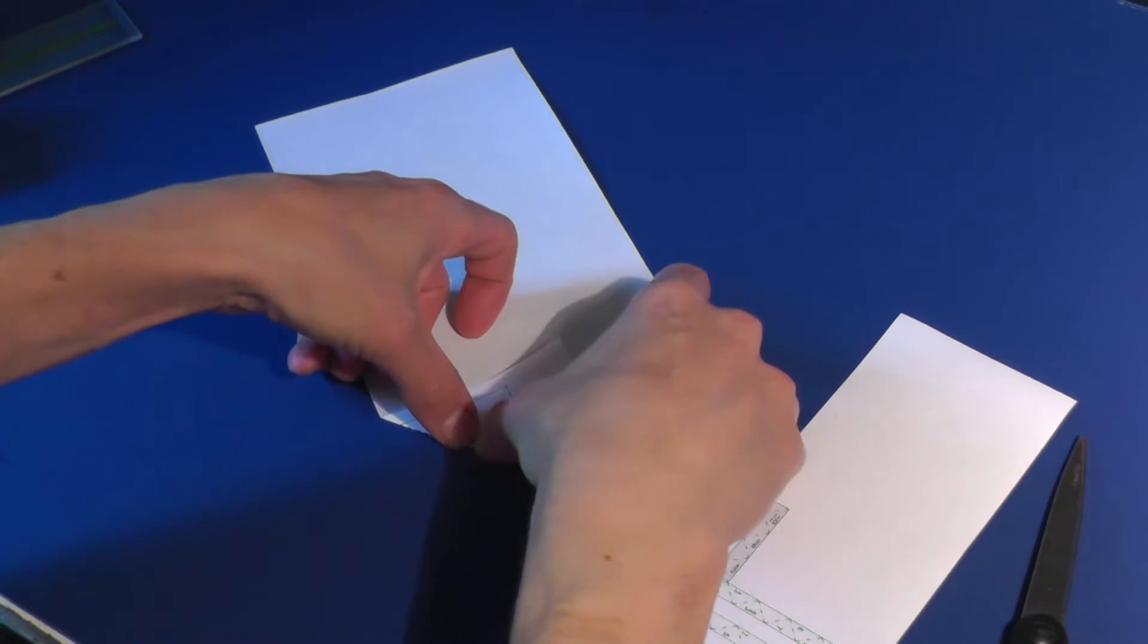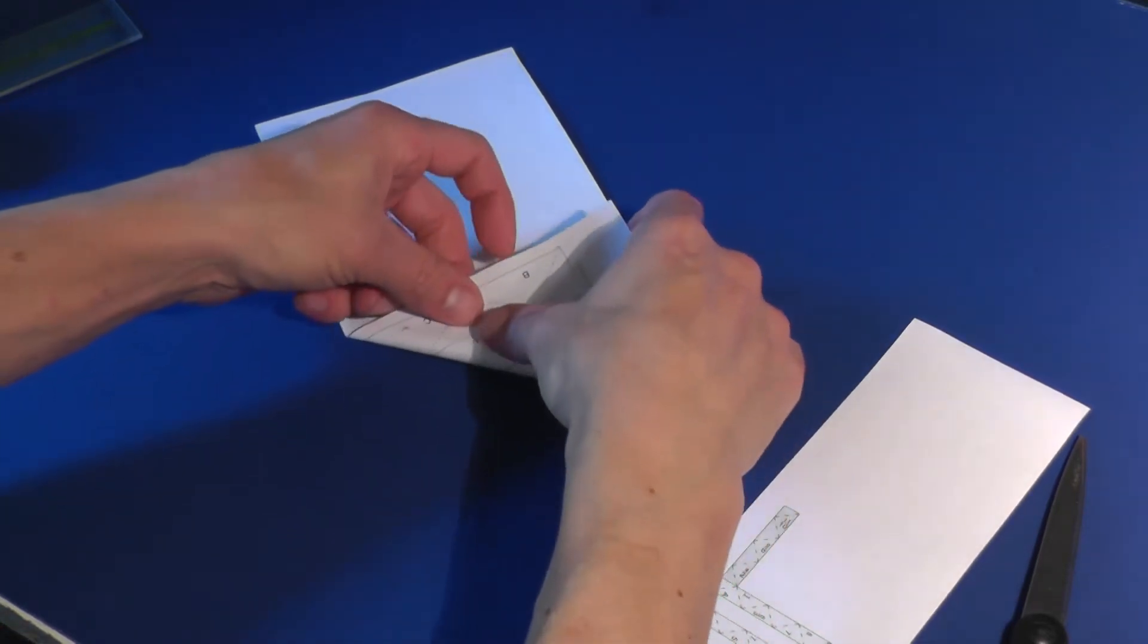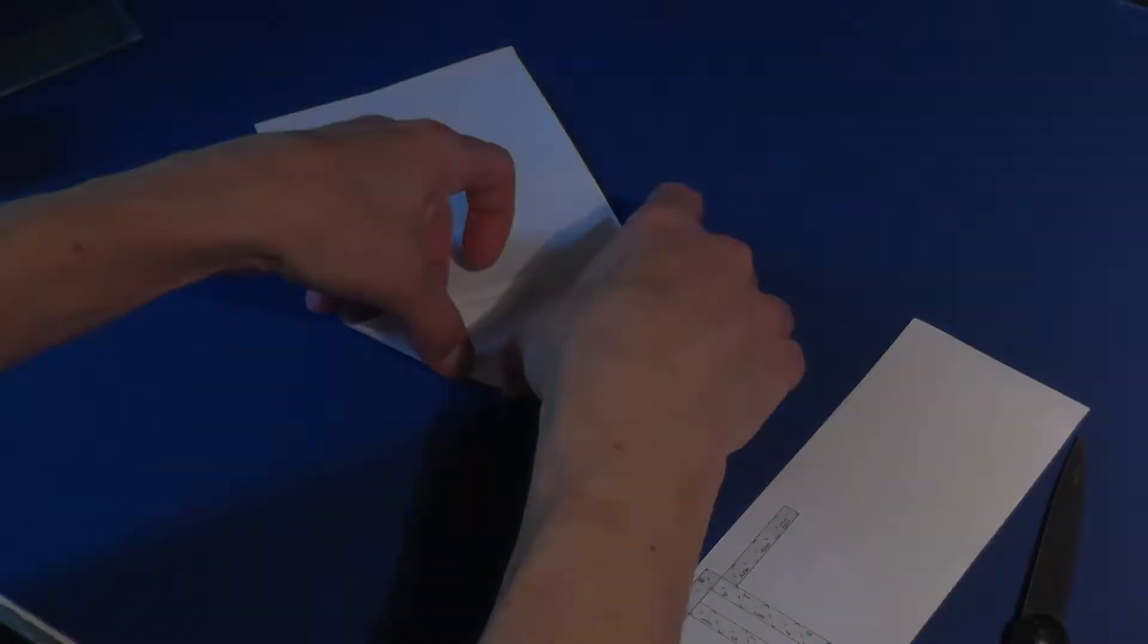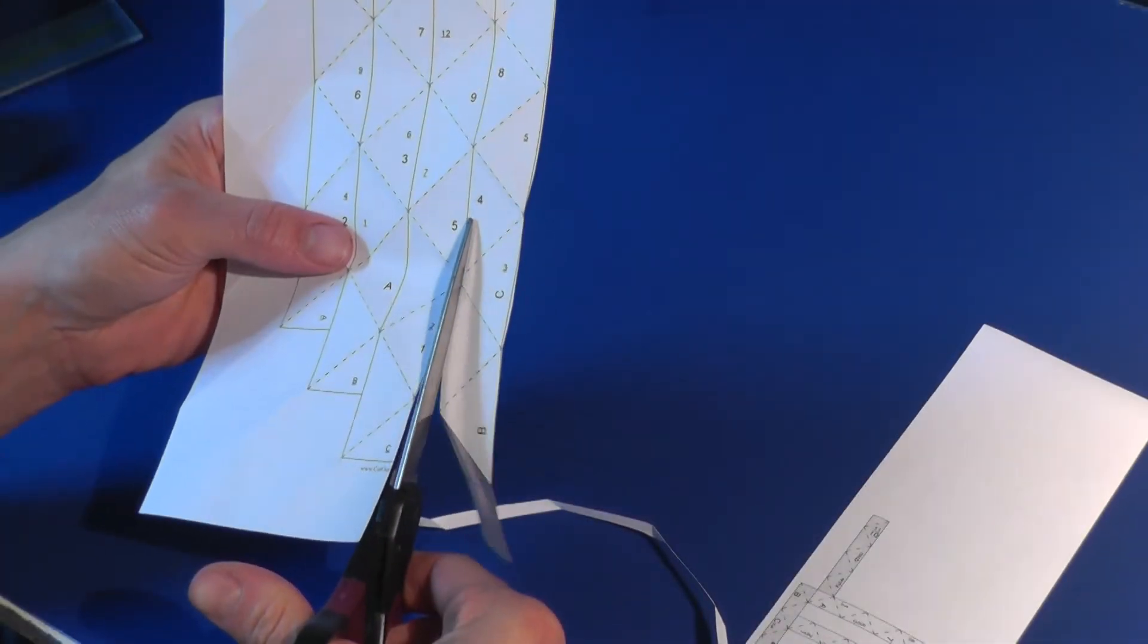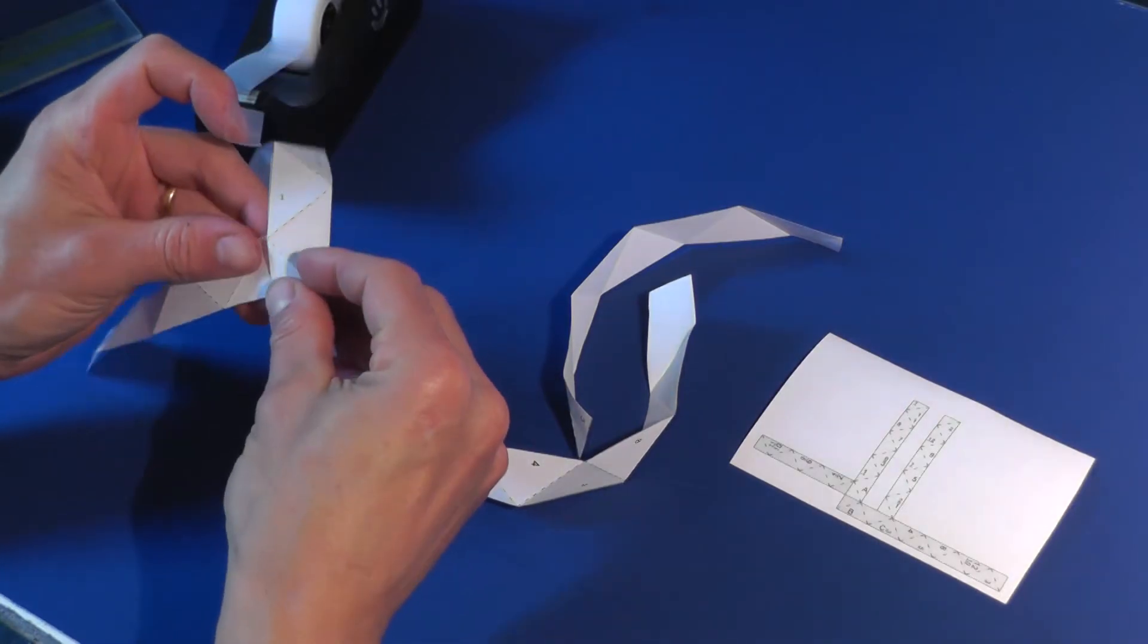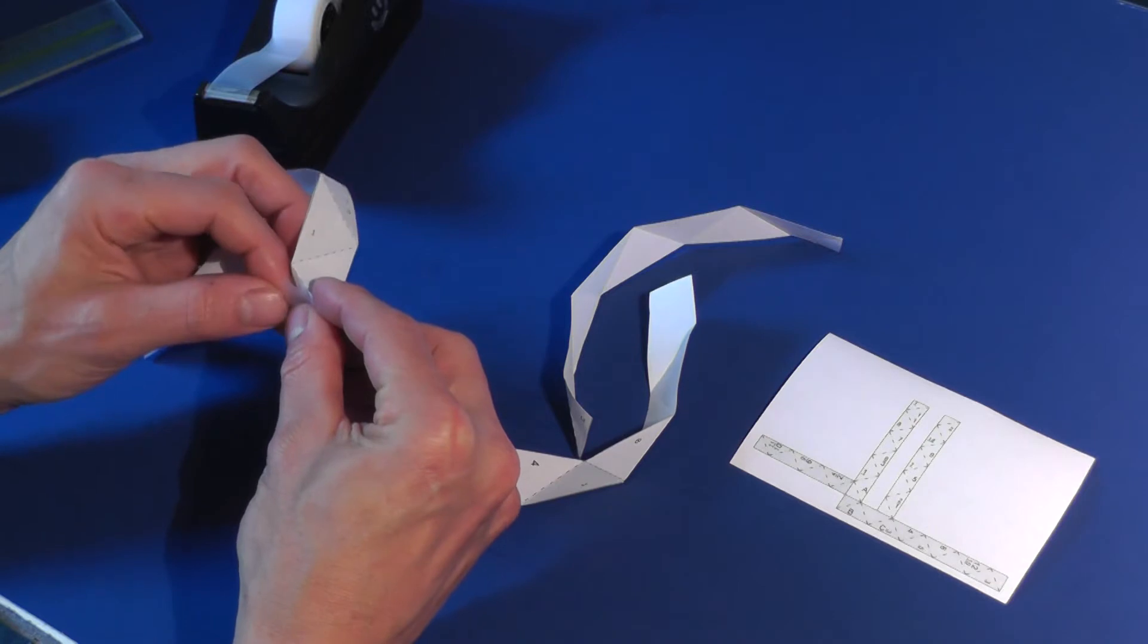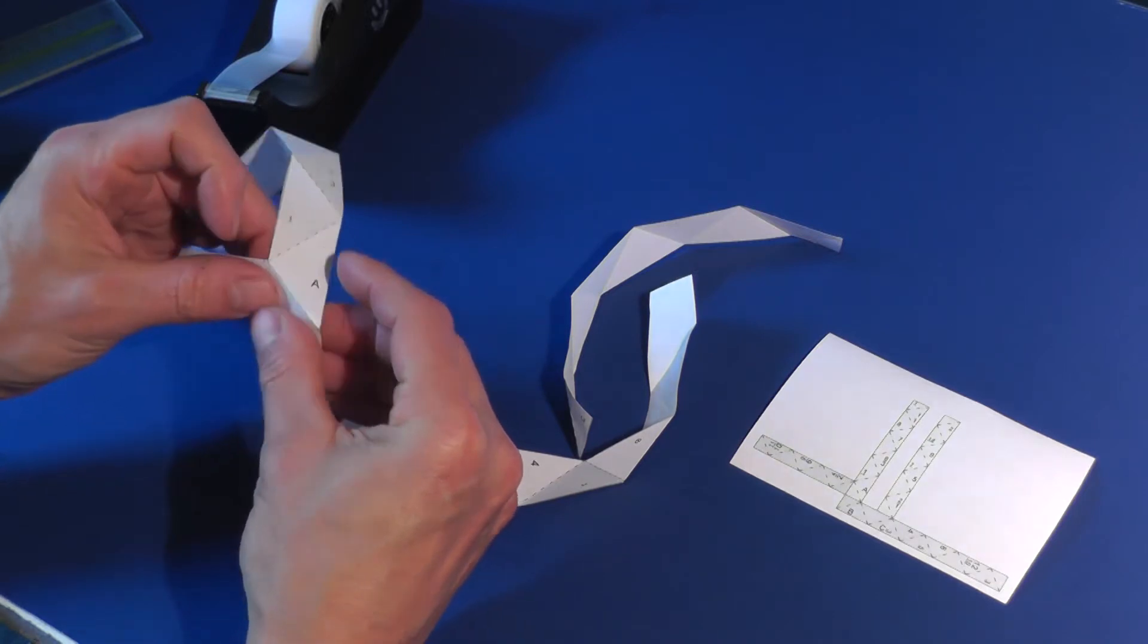Make mountain fold creases along all the dashed lines on the pattern. Cut out the strips along the solid lines. Tape the strips together in the orientation shown in the diagram on the pattern. Make sure the creases fold away from you in mountain folds.